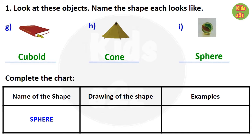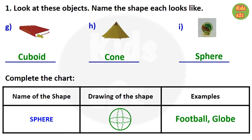Next question: here names of some shapes are given and kids need to draw that particular shape and also need to write one or two examples. Like beside sphere, they need to draw the sphere and then examples are football and globe. They can also write any other examples.